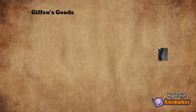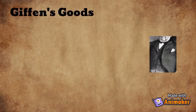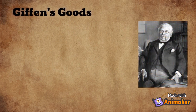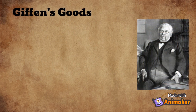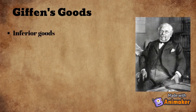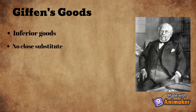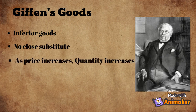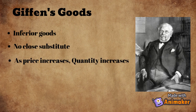These cases are called exceptions to the law of demand. The first one is the Giffen's Paradox, named after Scottish journalist and statistician Sir Robert Giffen. These are inferior goods which have no close substitute. They do not follow the law of demand — that is, when the price of these goods increases, the demand also increases, and vice versa.